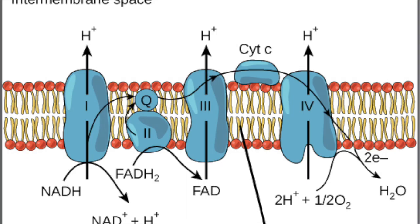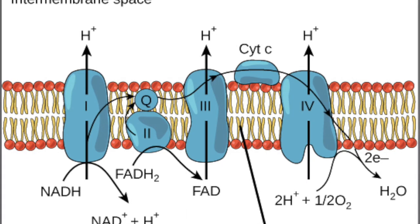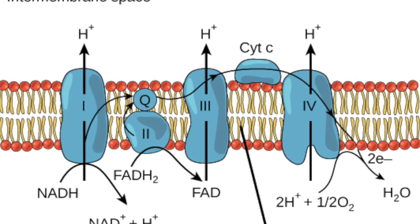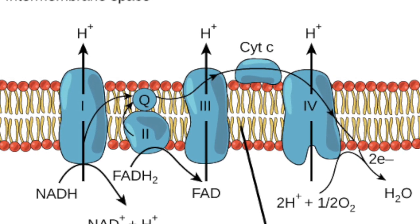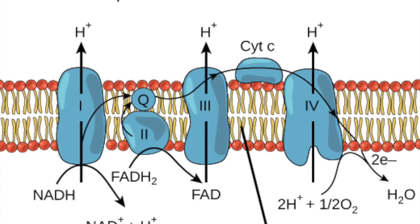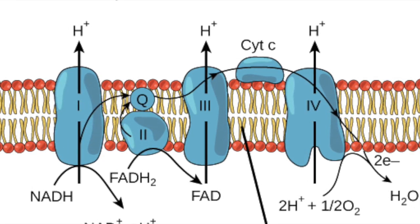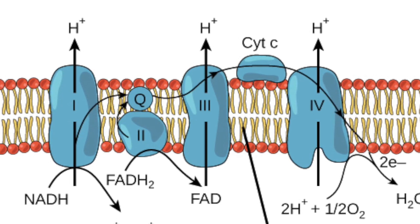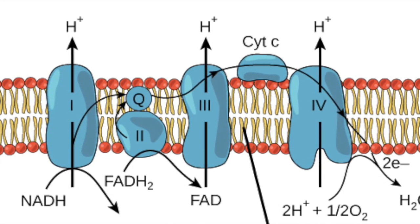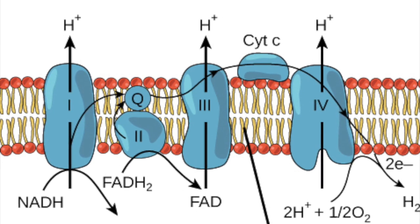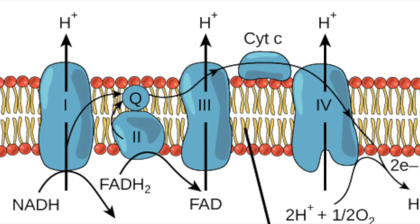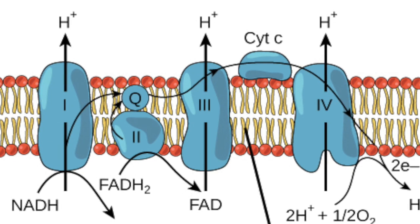The electron transport chain is about so much more. For starters, the electron transport chain is a series of proteins and organic molecules found in the mitochondria, specifically in the inner membrane of the mitochondria. In a nutshell, electrons are passed from one component of the transport chain to the next in a series of redox reactions, and the energy released from each of these reactions is captured to establish a hydrogen proton gradient whose potential energy is finally harnessed to make ATP.